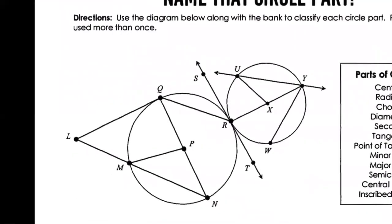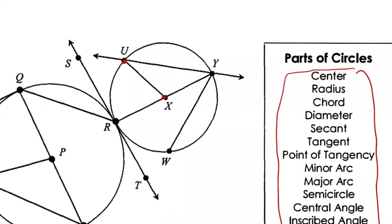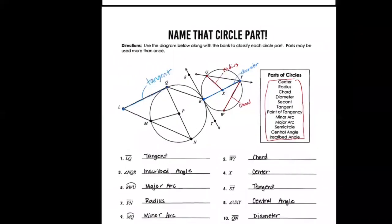Down here you can test yourself on naming the parts of a circle. For example, UX goes from the middle to the end — that's a radius. WY doesn't go through the middle but touches both ends — that's a chord. RY touches the ends and goes through the middle — that's a diameter. LQ touches the edge of a circle at only one point — that's a tangent. Go through each piece and check your answers.